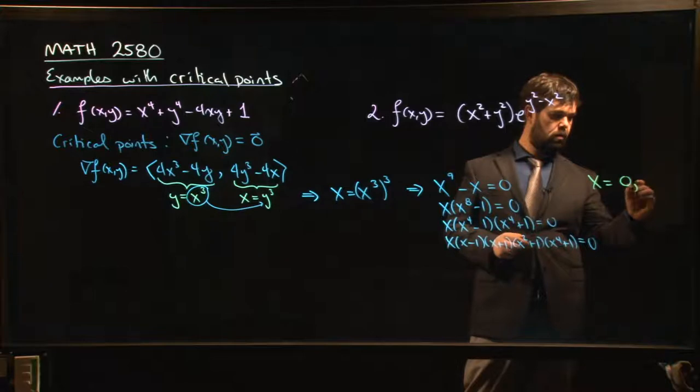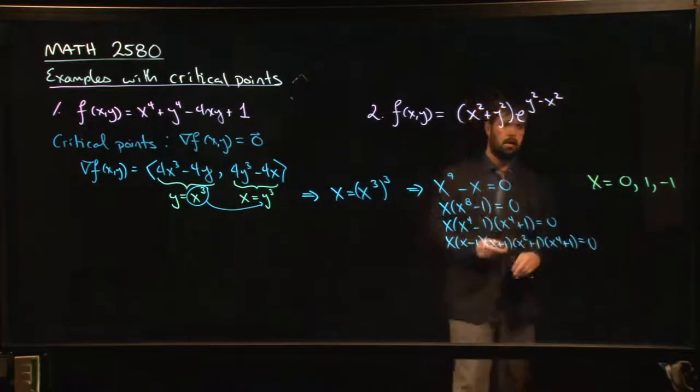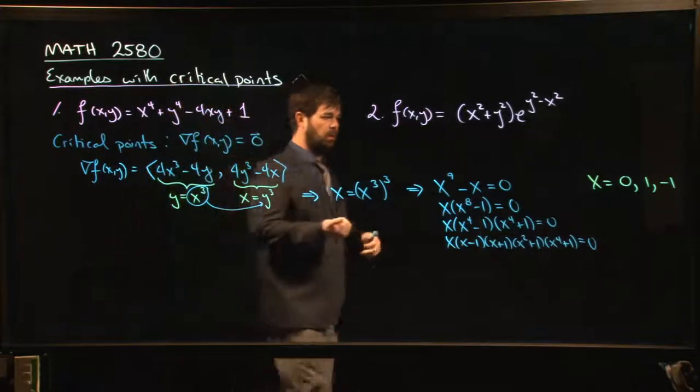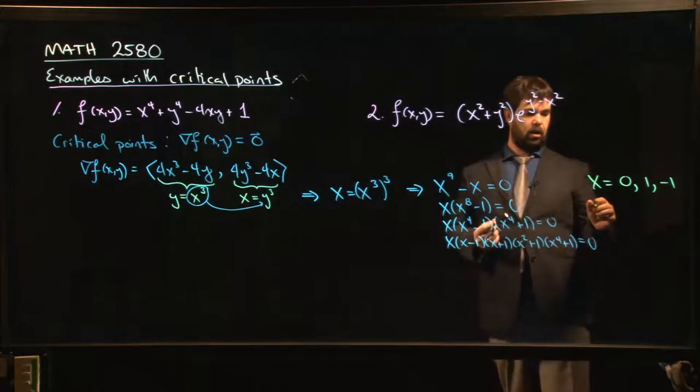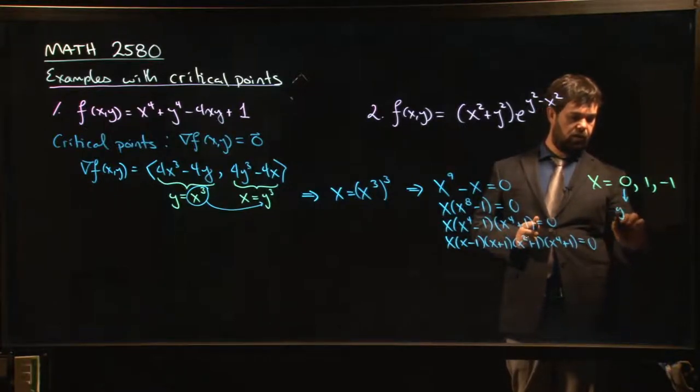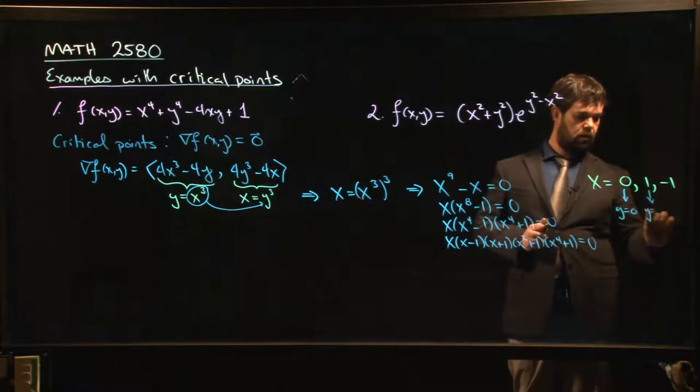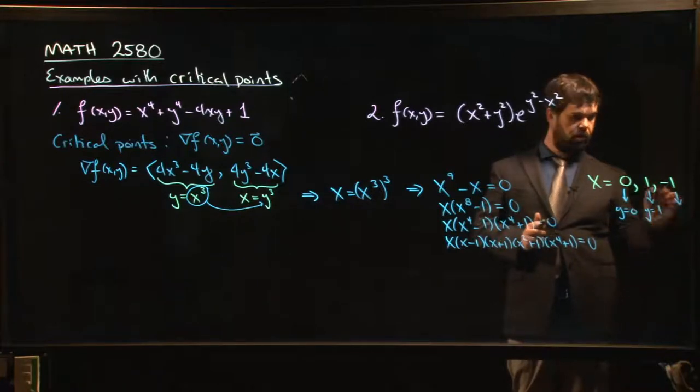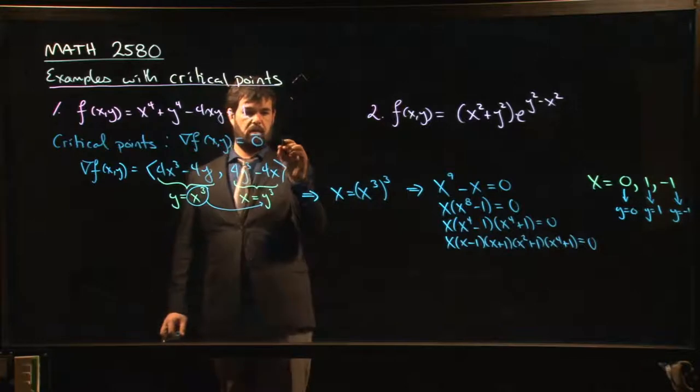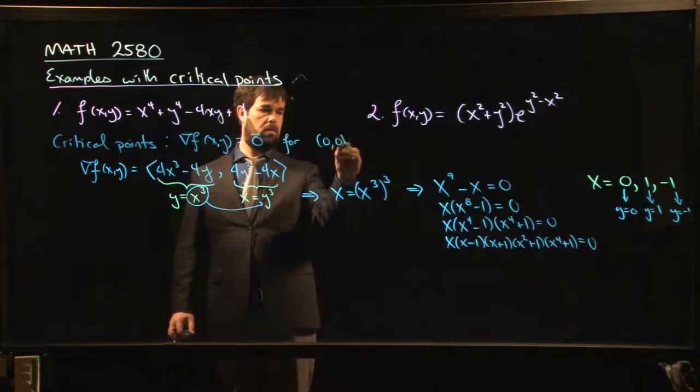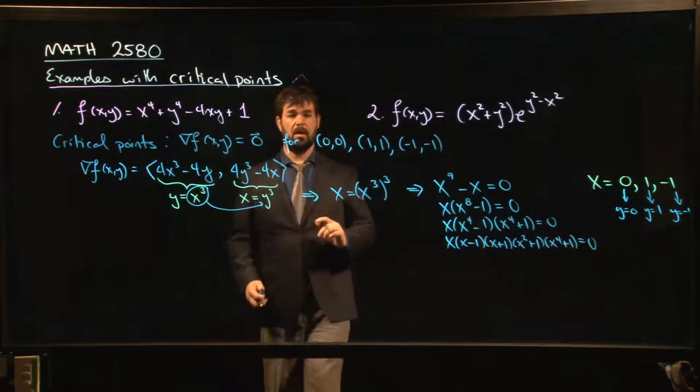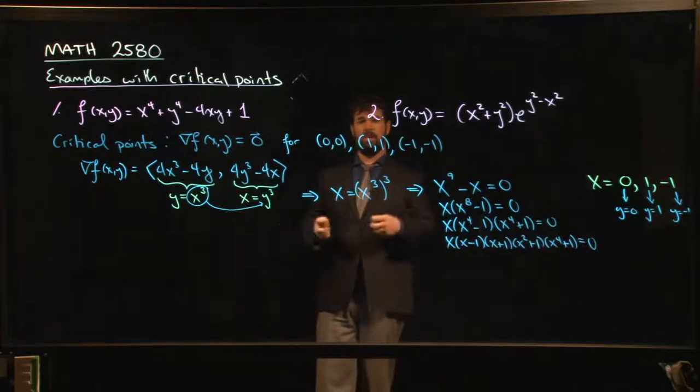x can be either 0, 1, or -1. Now we can come back over to the equations we started with. We know that y should be x³. We have three possible values for x. In this case, if x is 0, 0³ gives me that y should be equal to 0. If x equals 1, 1³ gives me y equals 1. If x equals -1, -1³ gives y equals -1. So there are three critical points: (0,0), (1,1), and (-1,-1).